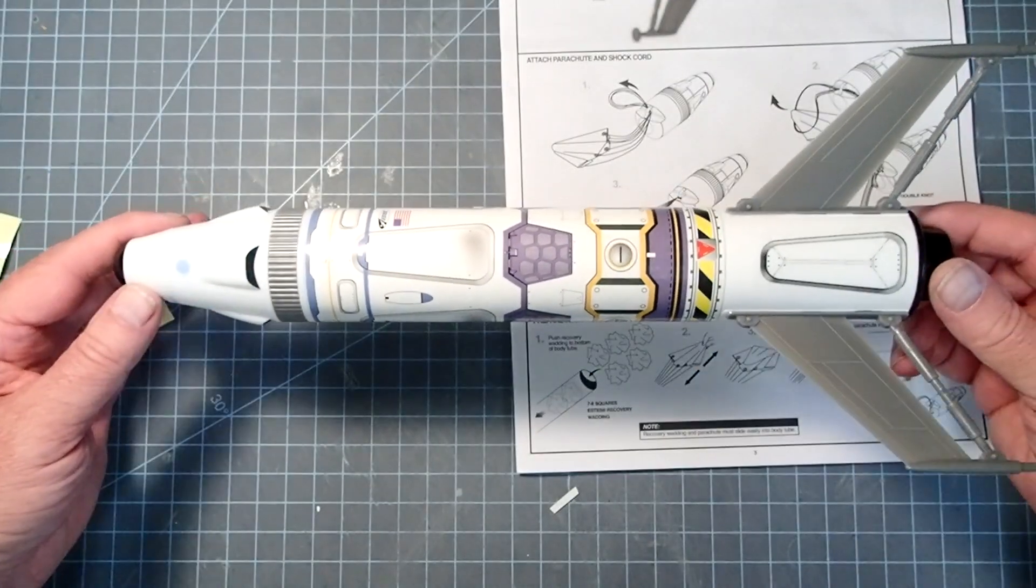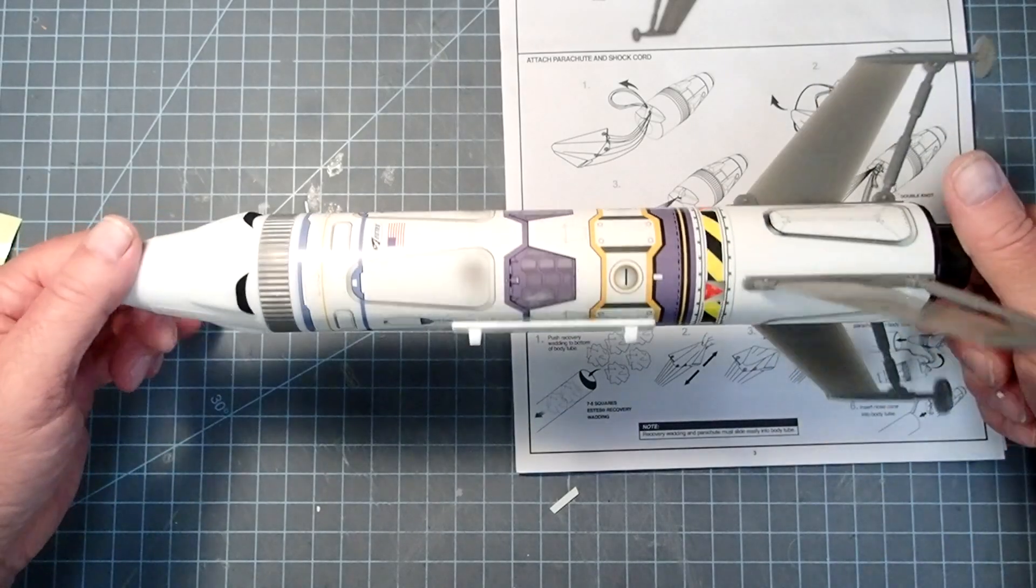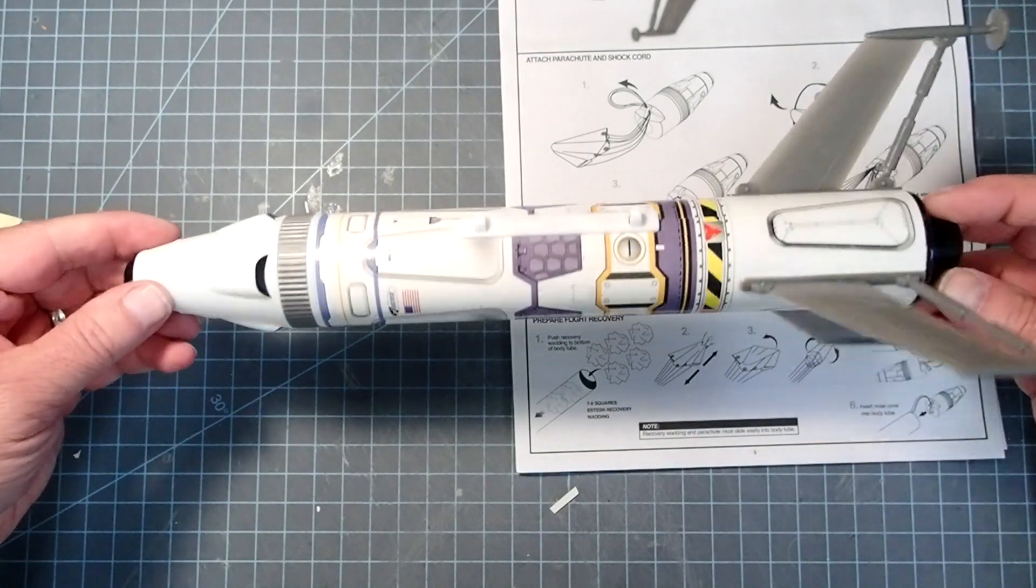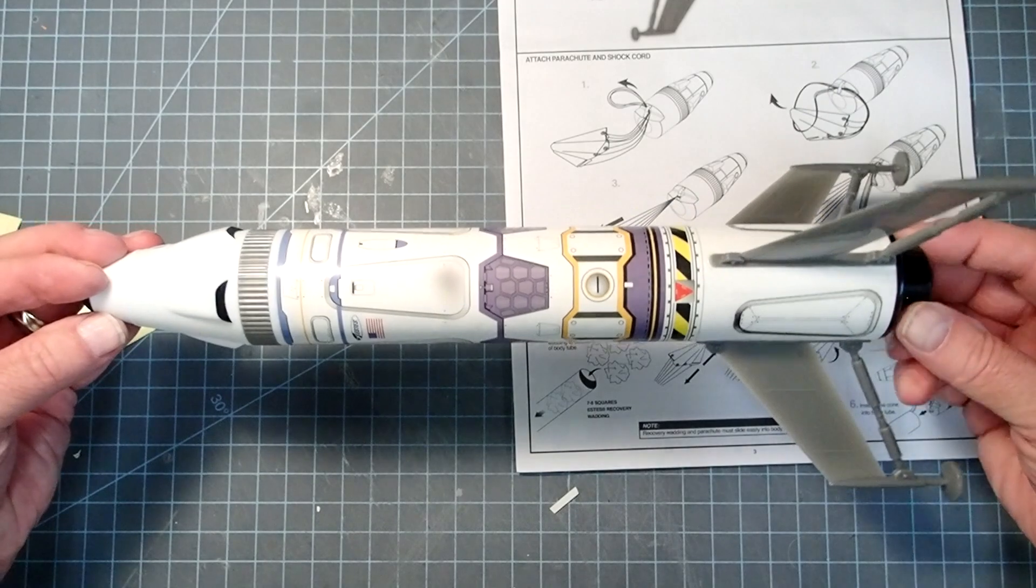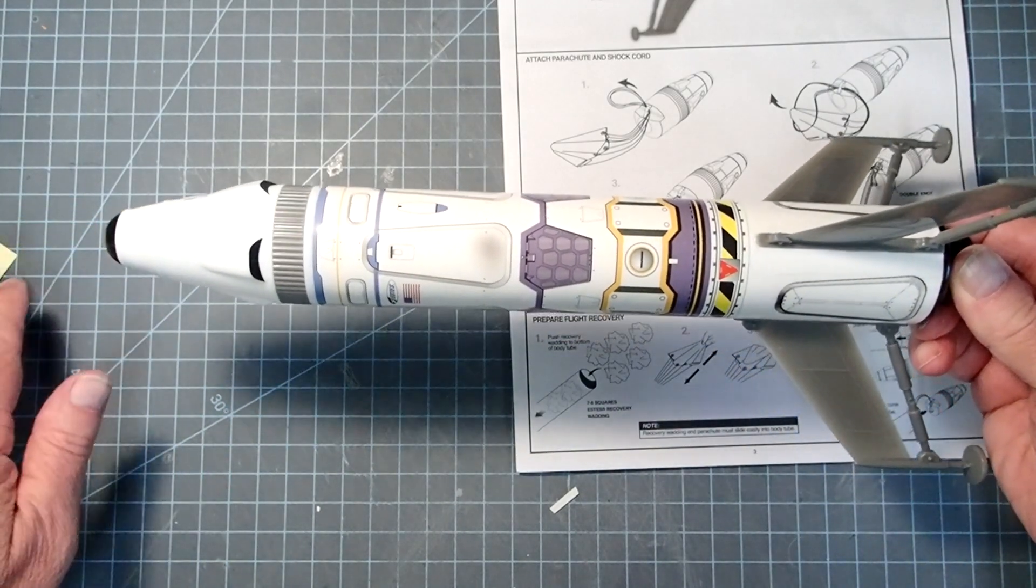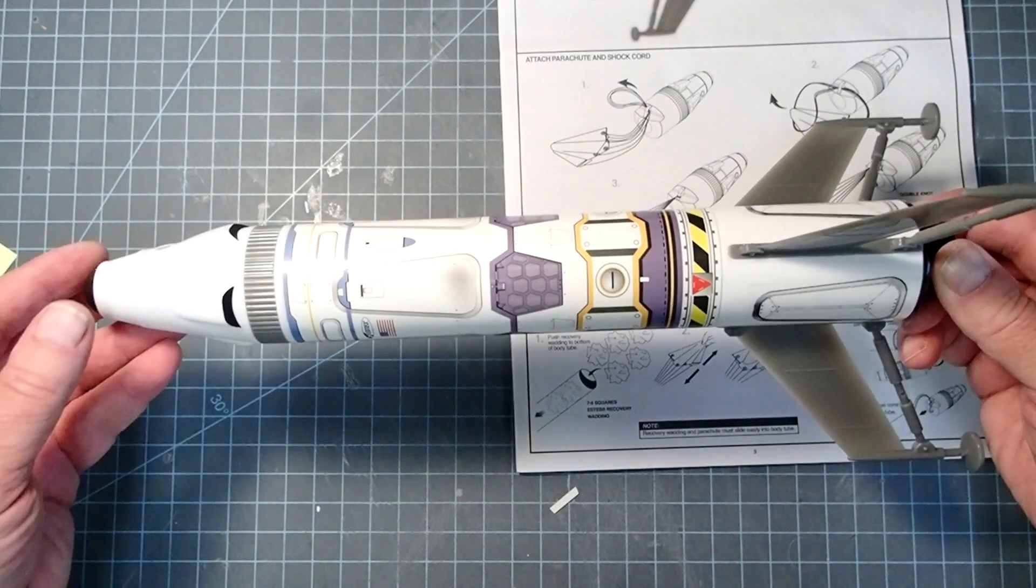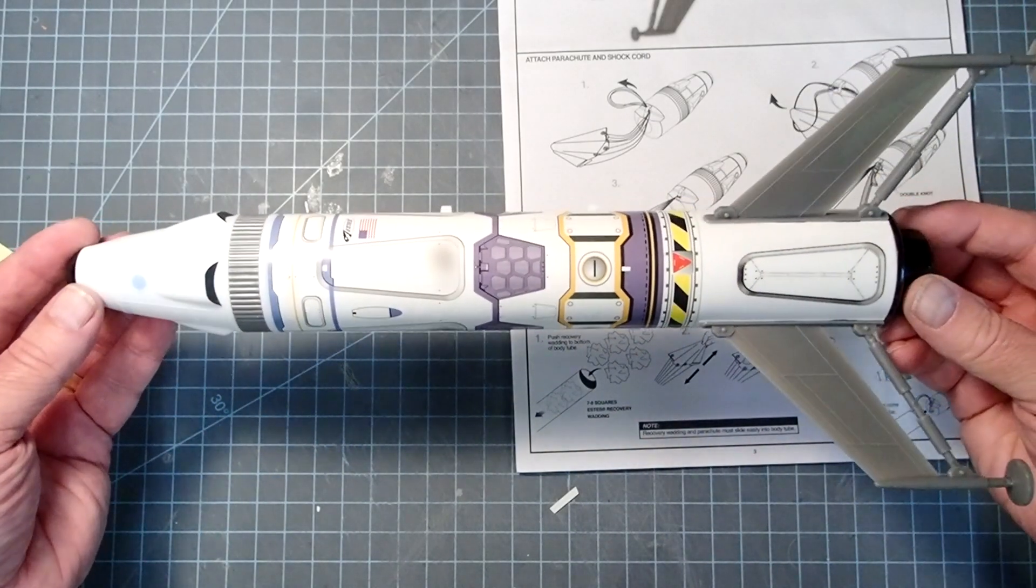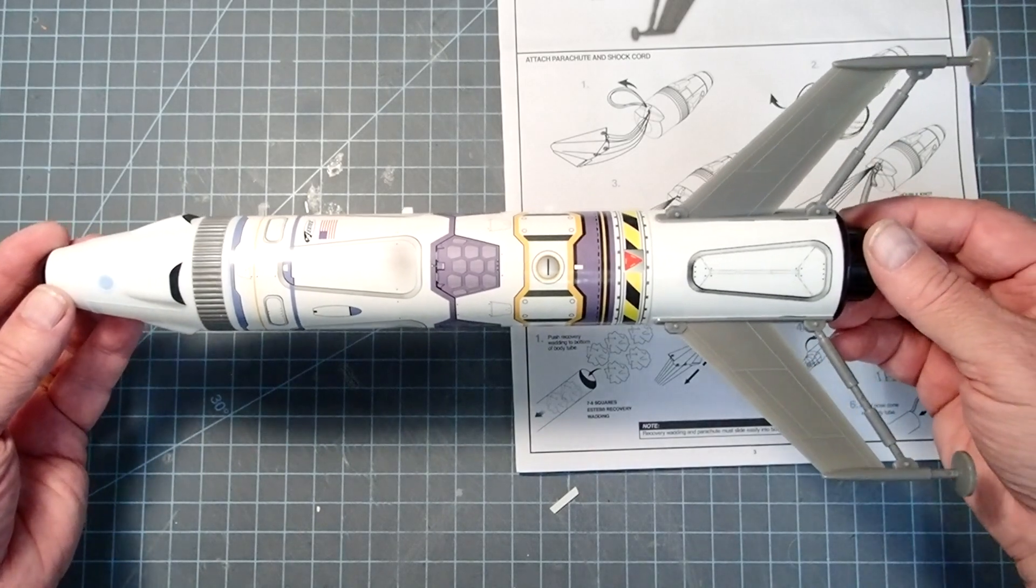And so there is my Mars Ascent Vehicle, or MAV, all done there. In total, this took me about an hour to do, even with the drying time, and hopefully yours went together just as easy. Hope you have a great launch and a safe recovery, and please stay tuned for more of my videos.